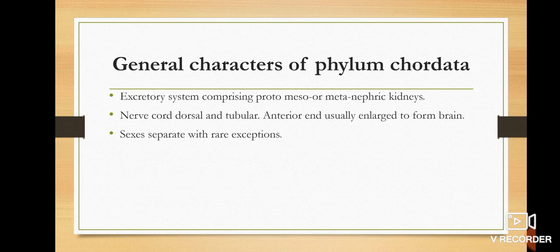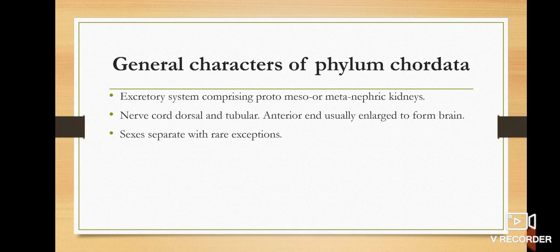The excretory system is nephric kidney, of proto, meso, and meta type. The nervous system is dorsal and tubular, present in the anterior end and enlarged into the brain. Regarding reproduction, the sexes are separate — mostly dioecious animals, meaning two different individuals, one either male or female. Exceptionally, some are monoecious.